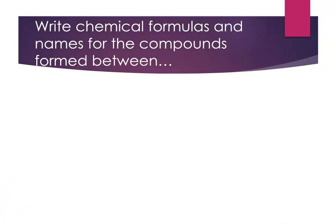Another example: sodium reacting with nitrogen. Sodium is group 1 — +1 ion. Nitrogen is group 15 — −3 ion. A one-to-one ratio won't work, but three sodium ions counteract the −3 charge of the nitride ion. So the formula is Na₃N, and the name is sodium nitride.